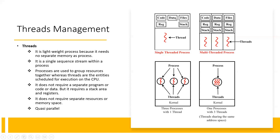The code and data file may have one thread generated because it is one process — one program under execution. Each thread must maintain its own stack and register. If there are multiple threads, each thread has a separate stack and register maintained.